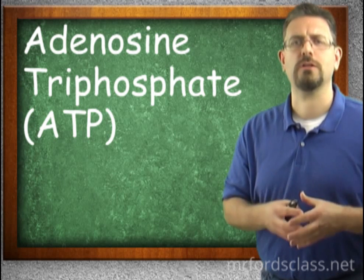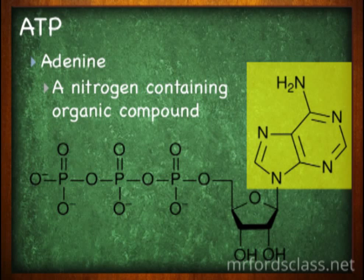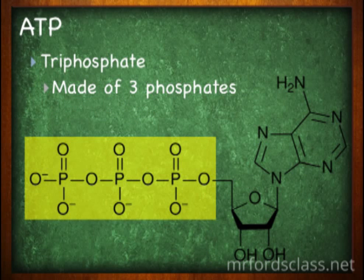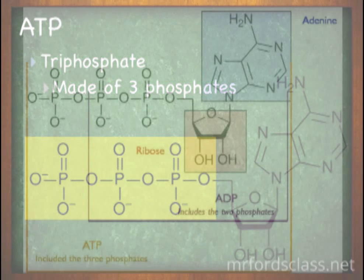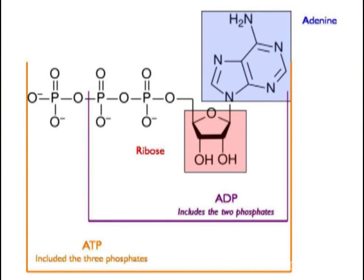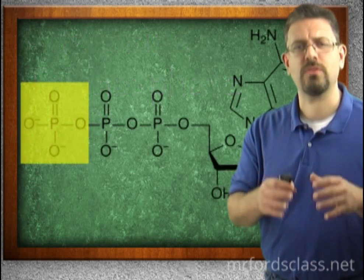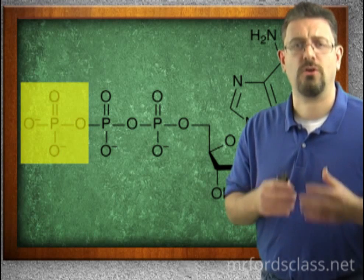So we break this molecule down. The adenosine is a nitrogen-containing organic compound. The ribose is a simple sugar made of five carbons. And the triphosphate, like I just said, is a composition of three phosphates attached. Let's take a look at the image — you can see the model of ATP. Notice once again that the three phosphates are attached at the end. The energy of the ATP is located at that last phosphate. That is where the energy is located.